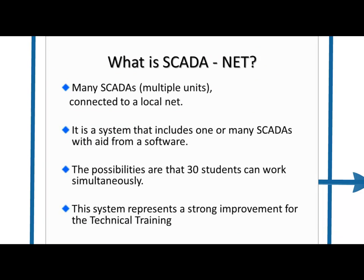Escata Net allows the connection of several computer control units through a local network. It uses a specialized software permitting 30 students to work simultaneously. This is what sets Edibon's computer control units apart from others in the market because it is a strong improvement to technical teaching and training.